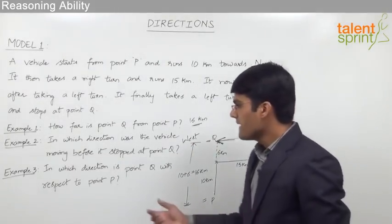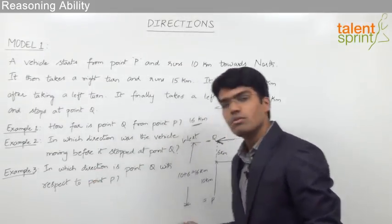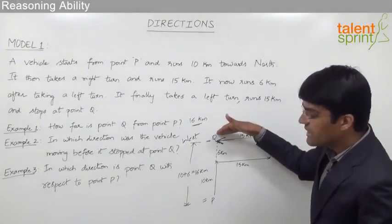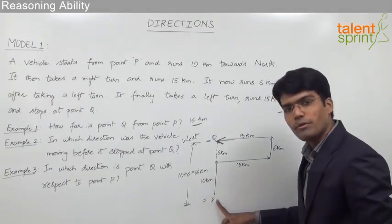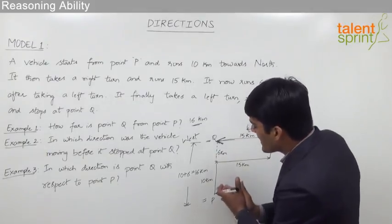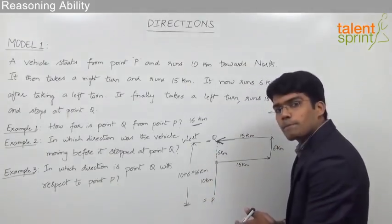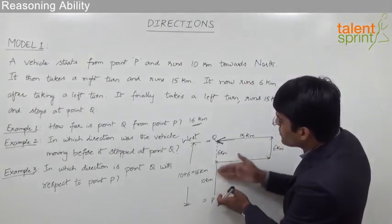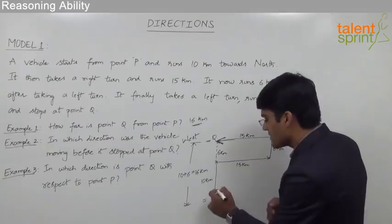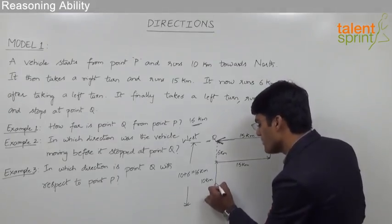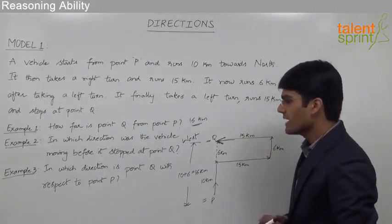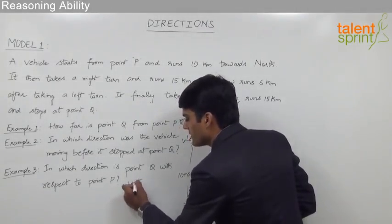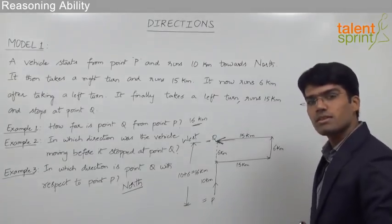The last question is in which direction is point Q with respect to point P? To solve this, we assume we are standing at point P. Observing from point P, point Q is towards the north, because to reach point Q we have to move in the northern direction. So the answer for the third question is north.